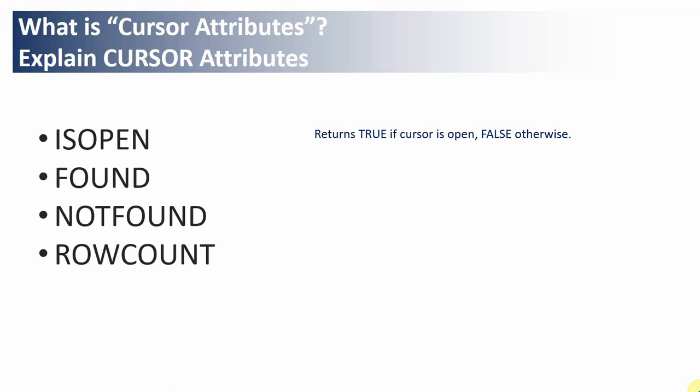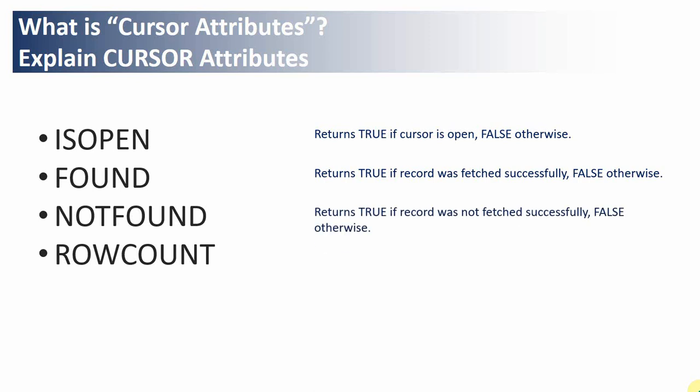The FOUND and NOT FOUND attributes give information about the fetch status. FOUND keeps returning true as long as the cursor is able to fetch data; the moment it reaches the end of records and the last fetch fails, FOUND returns false. Conversely, NOT FOUND keeps returning false while fetching succeeds, and returns true when the last fetch is unsuccessful. We use these to know whether the cursor fetch has reached the end of data.